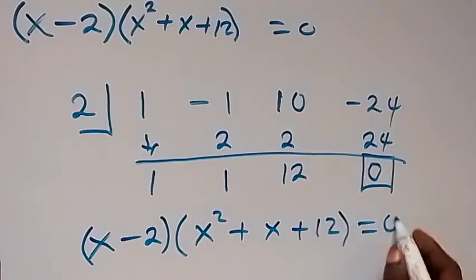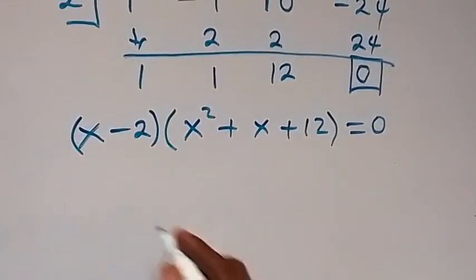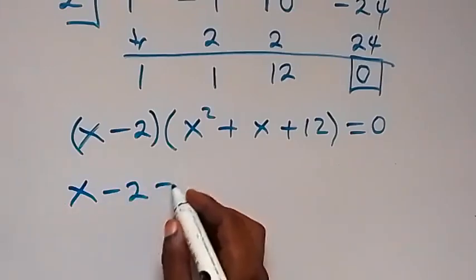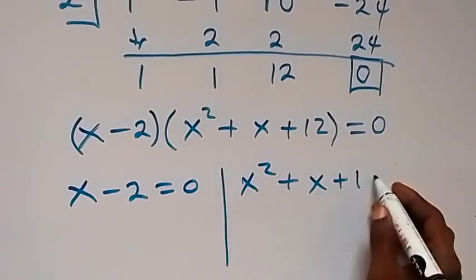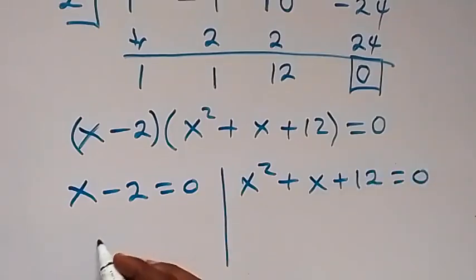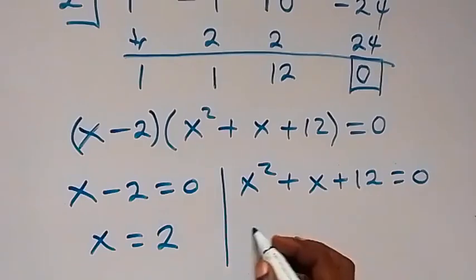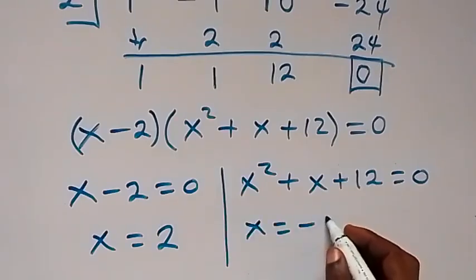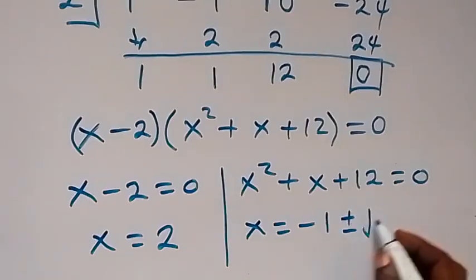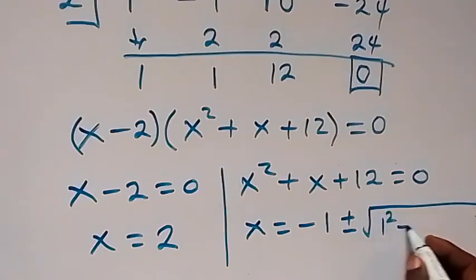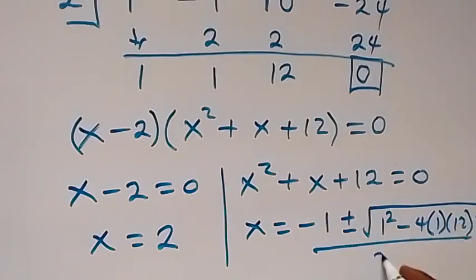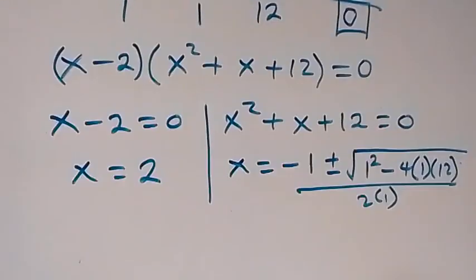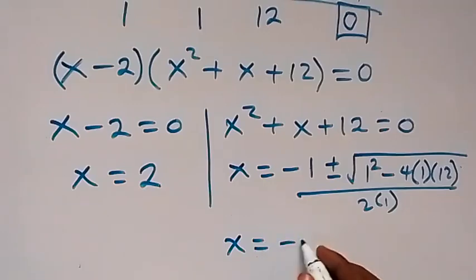So we have the factored form: x minus 2 times (x squared plus x plus 12) equals zero. The two cases are: x minus 2 equals 0, giving x equals 2; or x squared plus x plus 12 equals 0. For this we use the quadratic formula: x equals minus b, which is minus 1, plus or minus square root of b squared — that's 1 squared — minus 4 times a times c, where a is 1 and c is 12, all over 2a.